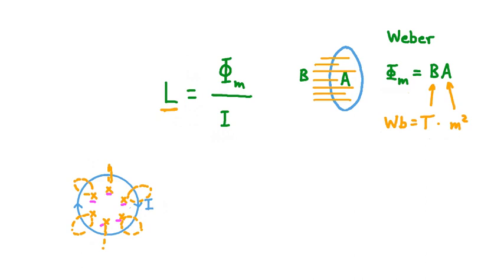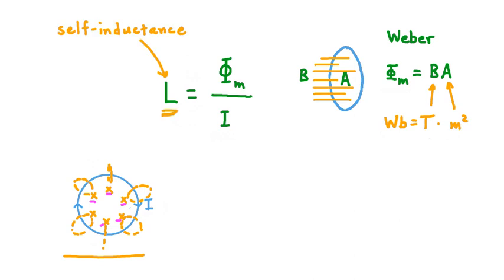Inductance is a measure of how much a current-carrying wire resists a change in its current. The higher L is, the harder it is to change the current I running through it. When we talk about the inductance of this current-carrying wire, we're talking about how the current in this wire responds to the magnetic flux created by that current — this is the self-inductance of a wire. There's also another kind of inductance called mutual inductance, which has to do with more than one current-carrying wire, and we'll talk about it soon.